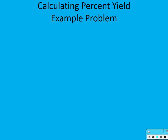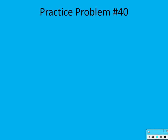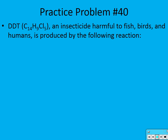Now for practice problem number 40 in your guided notes. DDT is a huge molecule — here's its chemical formula. DDT is an insecticide harmful to fish, birds, and humans, and is produced by the following reaction. This is how they produce DDT — this product right here is what they call DDT.